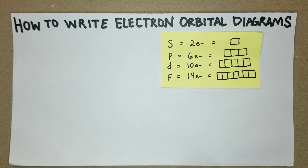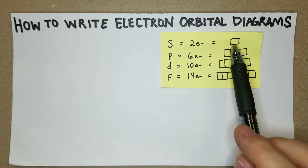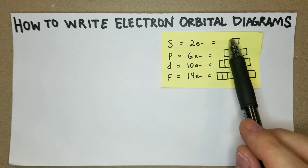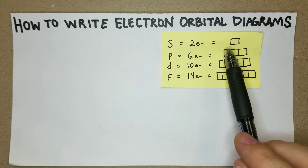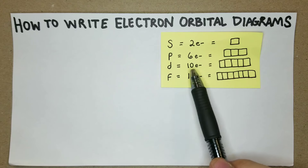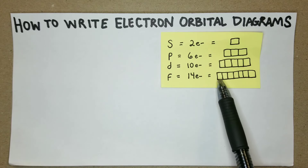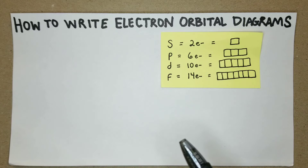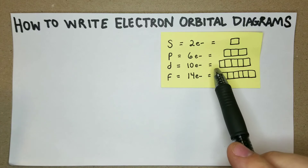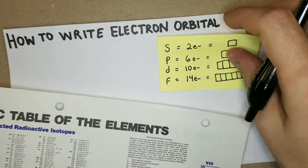The s orbitals all contain two electrons, and when writing the box diagrams it's just one box — each box will have two arrows indicating two electrons. The p orbital will have six electrons in three boxes, the d orbital will have 10, and the f orbital will have 14 electrons — seven boxes each having two. If you have access to the periodic table, you don't even need to memorize this.